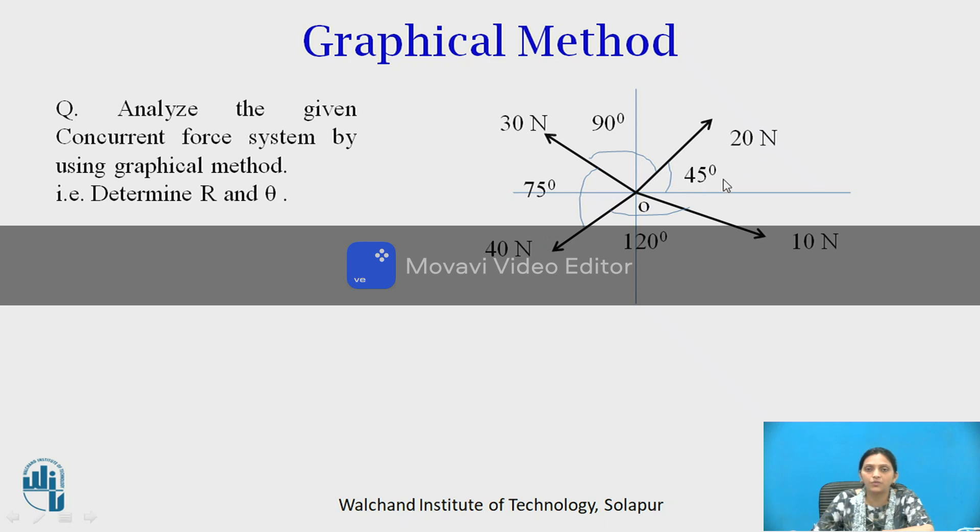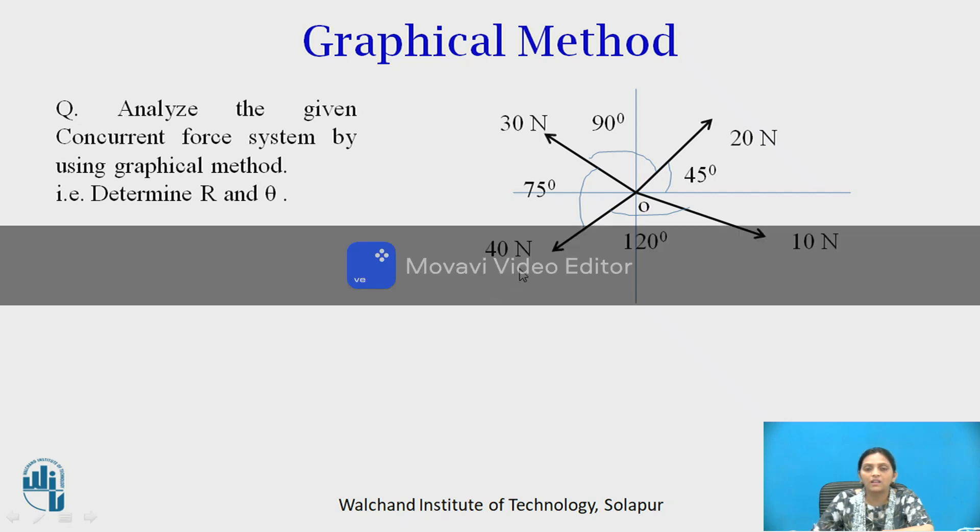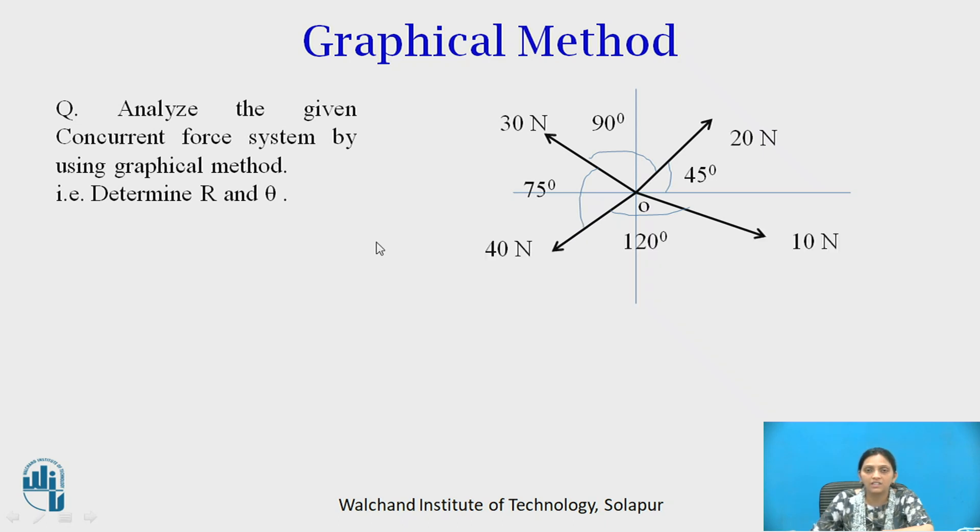Angle of 20 Newton force with horizontal is given 45 degrees. Angle between force 30 Newton and 20 Newton is given 90 degrees. Angle between 30 Newton and 40 Newton is given 75 degrees. Angle between 40 Newton and 10 Newton is given 120 degrees. Analyze the given force system by using graphical method, meaning determine resultant R and its direction theta.